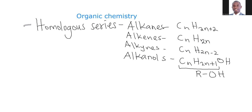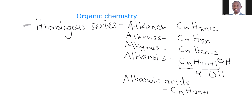Then you go to the next homologous series, which is the alkanoic acids. In the alkanoic acids, the formula is CnH2n+1, then you have the COOH. So this one again is an alkyl group, which can be represented by R, which gives us RCOOH. So this is the general way of writing the alkanoic acids.